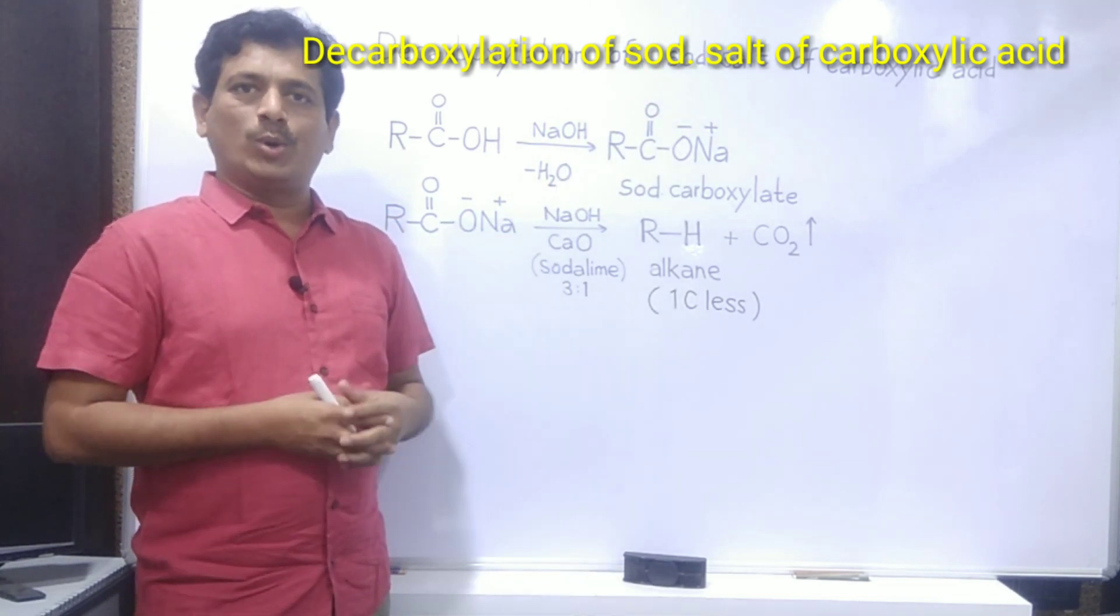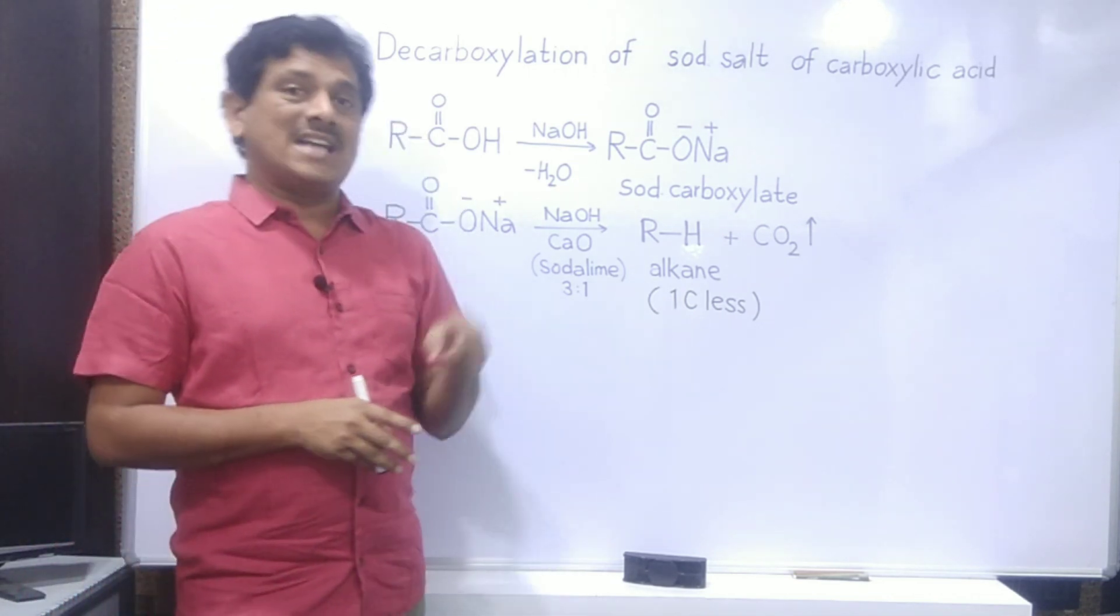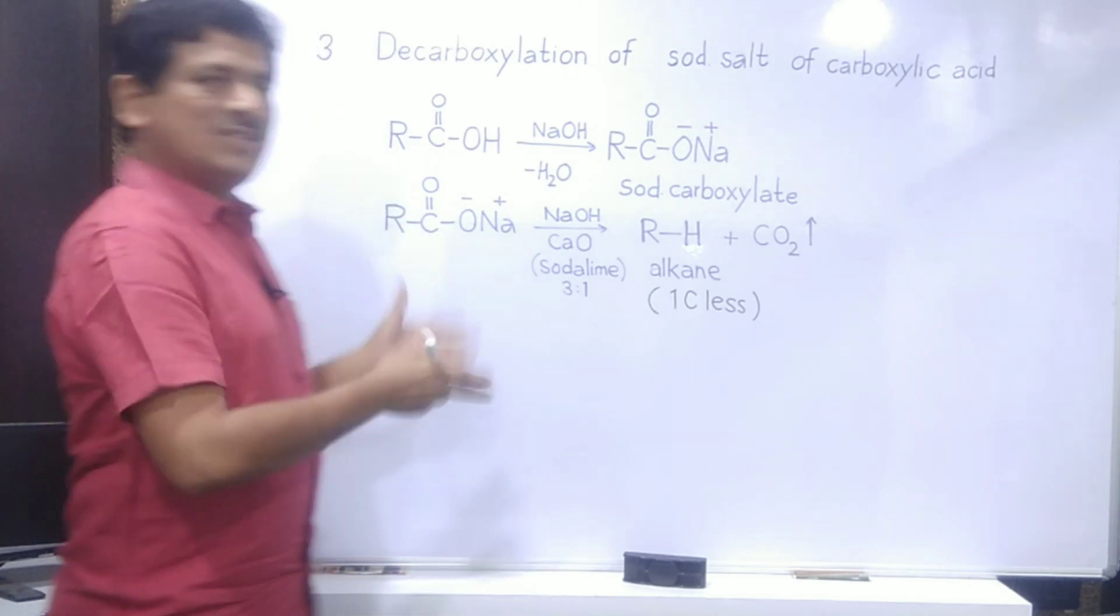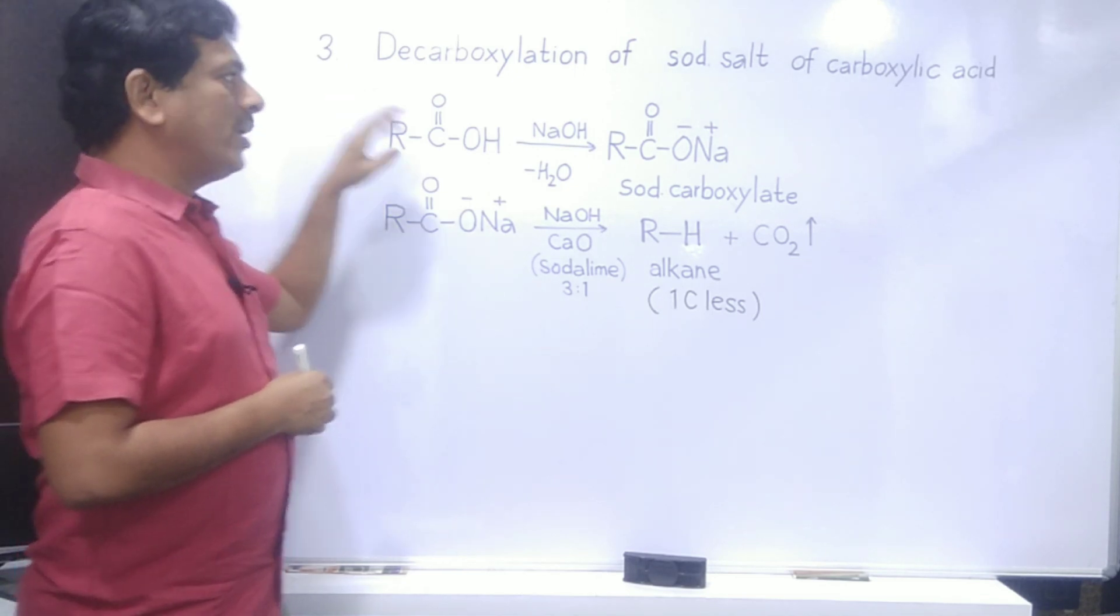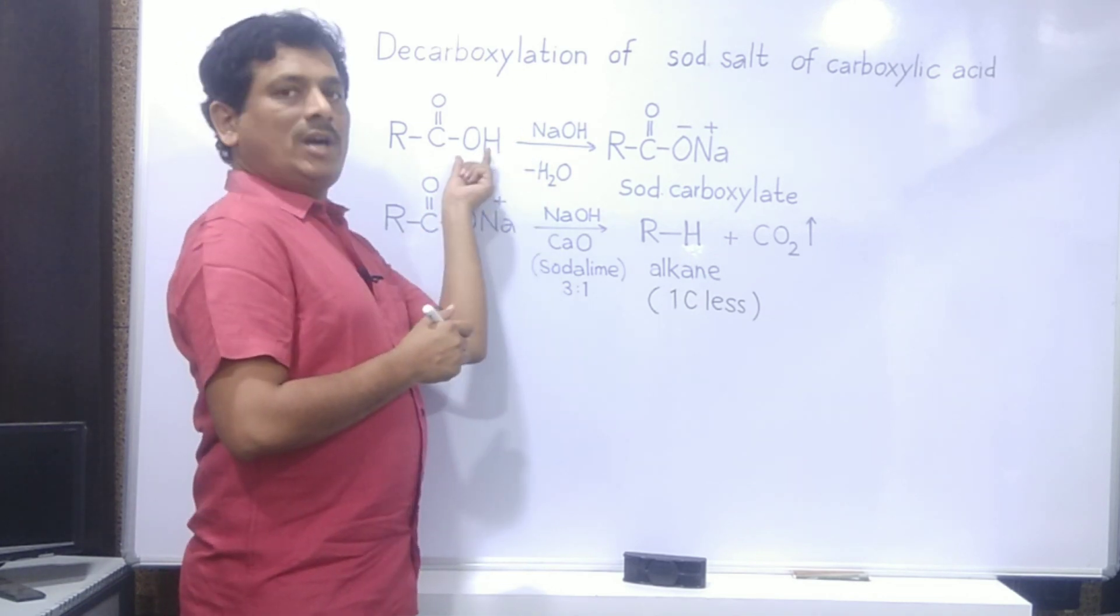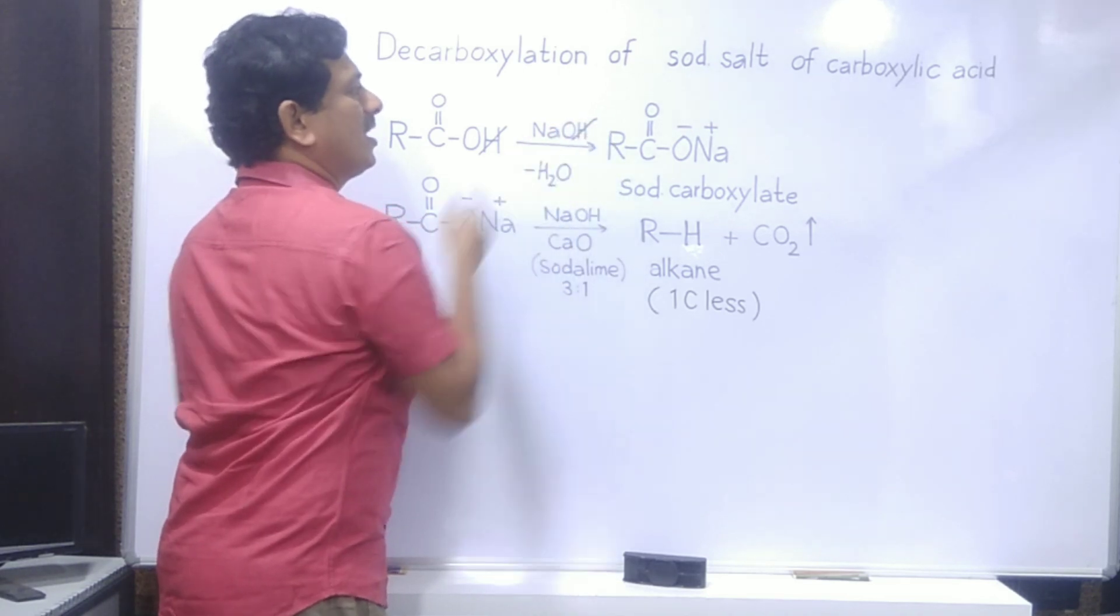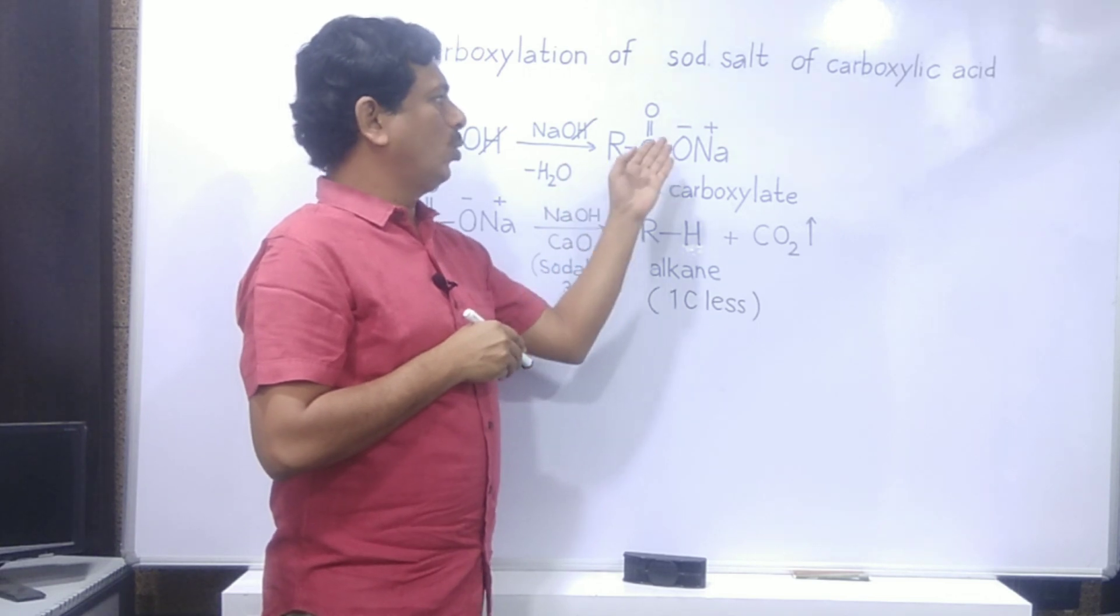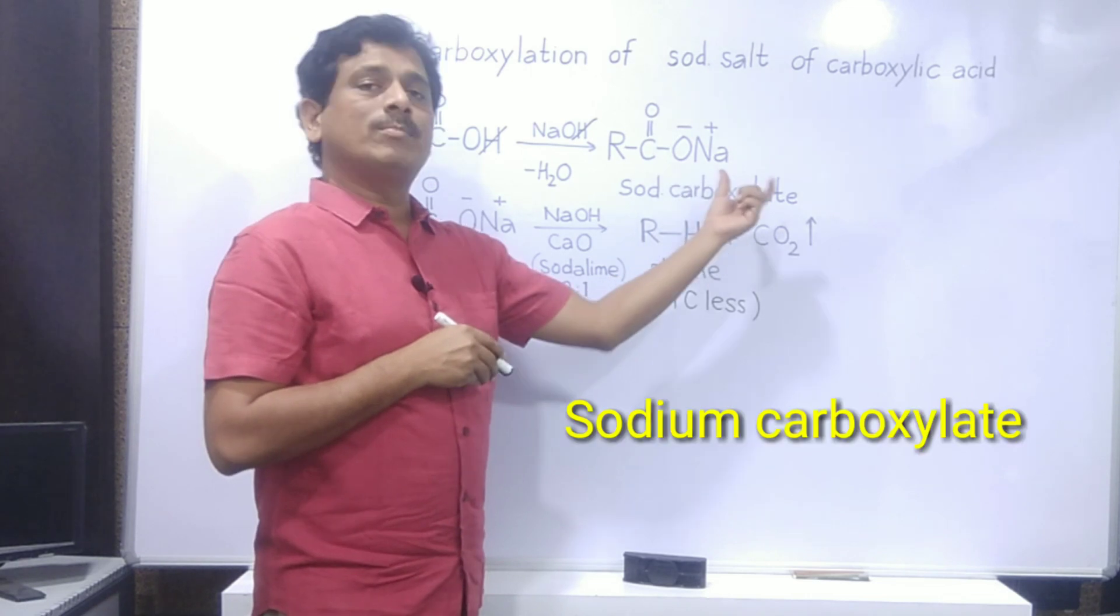We all know carboxylic acids are R-COOH. That carboxylic acid, when treated with sodium hydroxide, gives a sodium salt. Here I am taking a carboxylic acid which I am treating with NaOH. The H of carboxylic acid and OH of NaOH go as a water molecule, and what I am forming here is the sodium salt RCOONa, sodium salt of carboxylic acid. It is called sodium carboxylate.